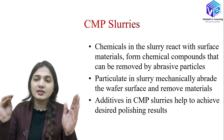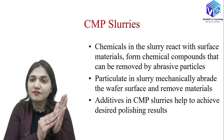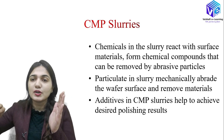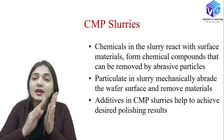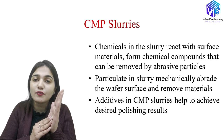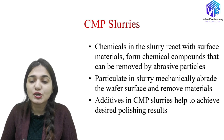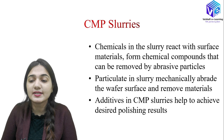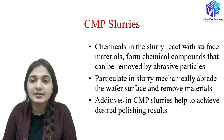In the slurry we have some chemicals. These chemicals go to the wafer, react with the wafer, and form a compound. This compound is removed, so the wafer becomes mechanically abraded — it etches out or removes a layer of the wafer. We are having abrasion of the wafer surface; particulates in the slurry mechanically abrade the wafer surface and remove the material. We also have some additives present in the CMP slurries which help to achieve the desired polishing results.